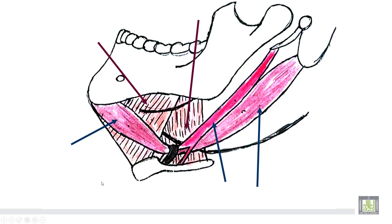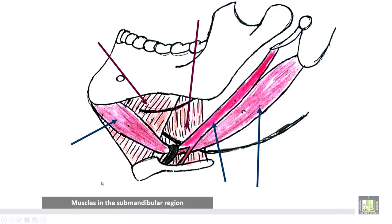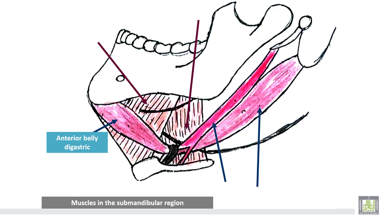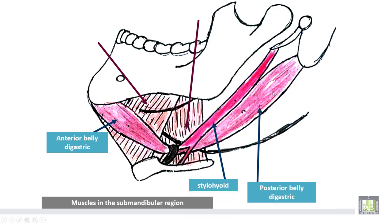These are the muscles in the submandibular region: the anterior belly of the digastric, the posterior belly of the digastric, the stylohyoid muscle, the mylohyoid muscle, and the hyoglossus muscle.